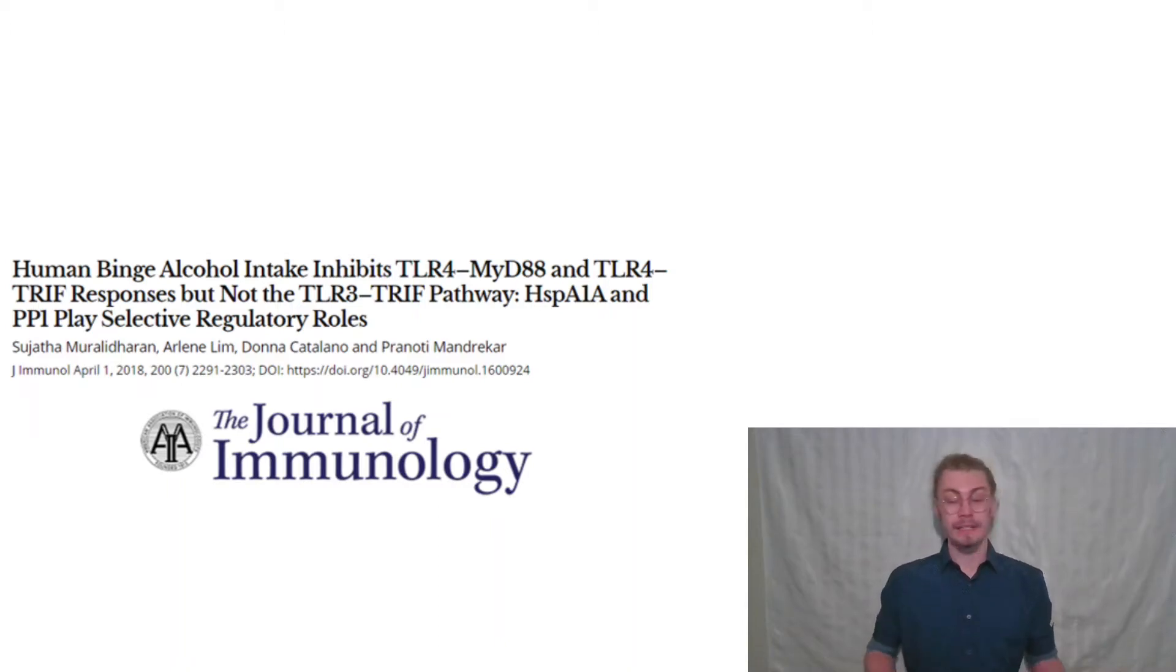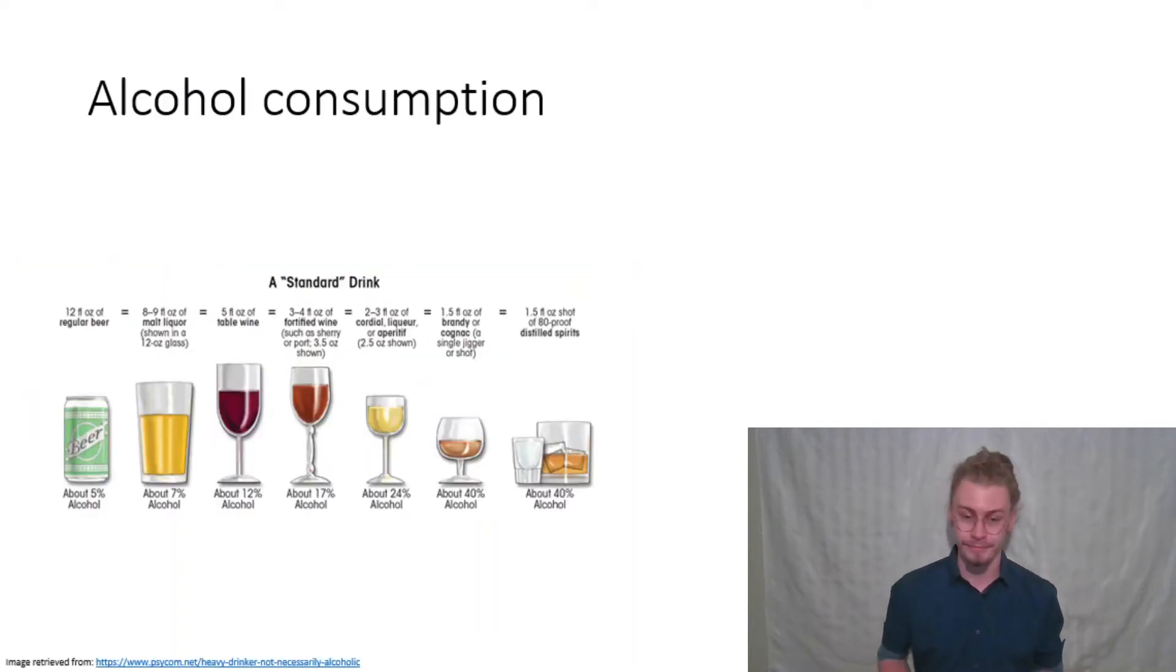There are many different types of alcohol that vary in how they are made, how much alcohol concentration they have, and how much people enjoy them. To bring this all together, there's been a decision as to what a standard drink entails. A standard drink is 12 fluid ounces of 5% alcohol or one and a half fluid ounces of 40% alcohol.